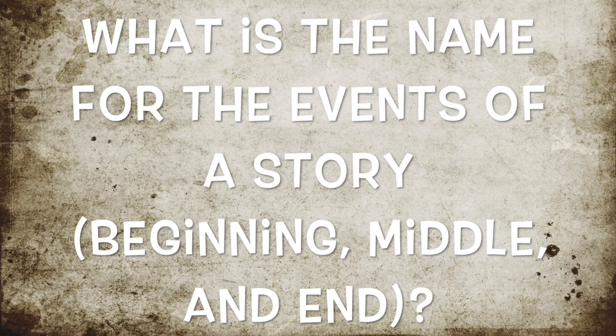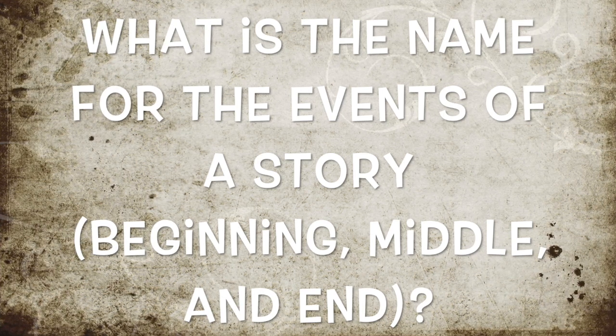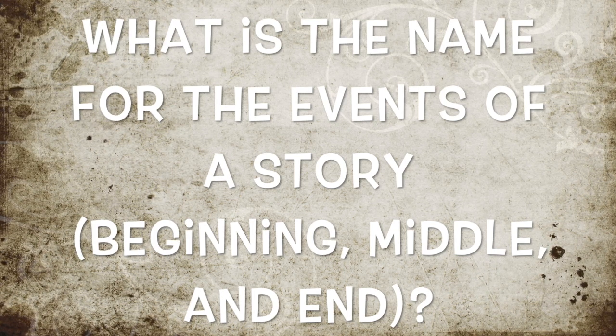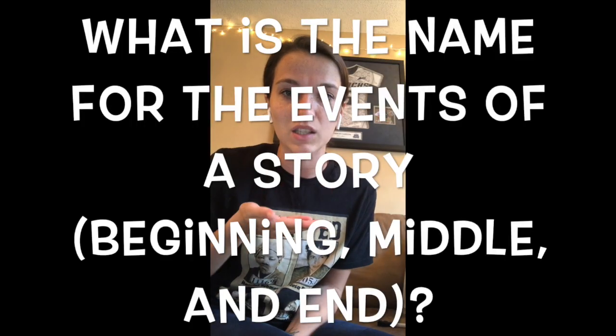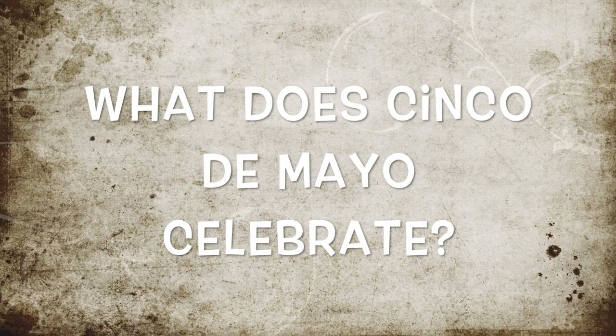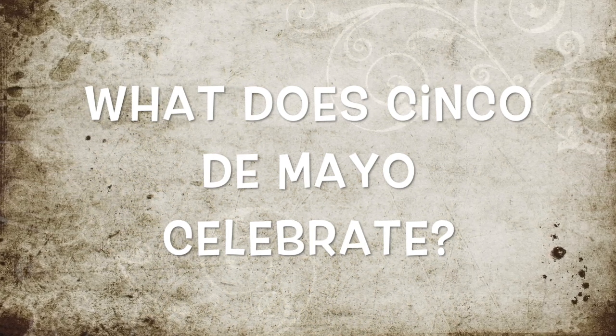Alright, we went through that really fast. Here are this week's challenge questions. First: what do we call the events in the story? That means the beginning, the middle, the end, the setting, the conflict, the resolution — those are all part of the story's blank. You need to tell me what that blank is. Second: this week was Cinco de Mayo, May 5th — what does it celebrate? You may do research on this, you may Google it. Get your answers to me by commenting on this YouTube, commenting in my Google Classroom, by emailing me, or by having your parents text me.